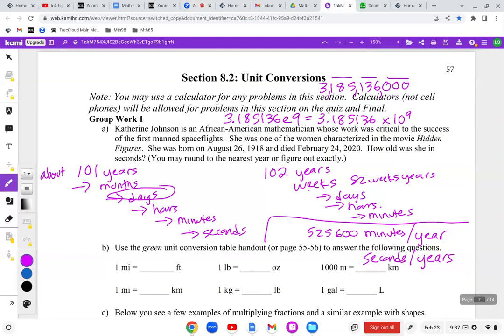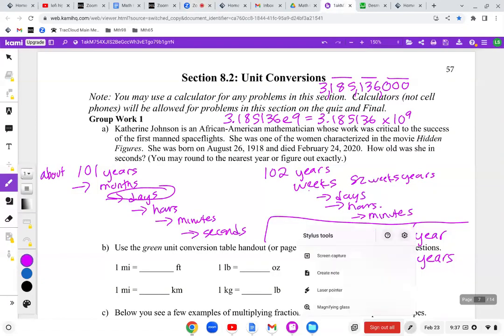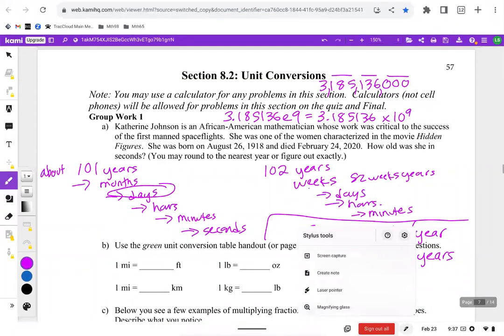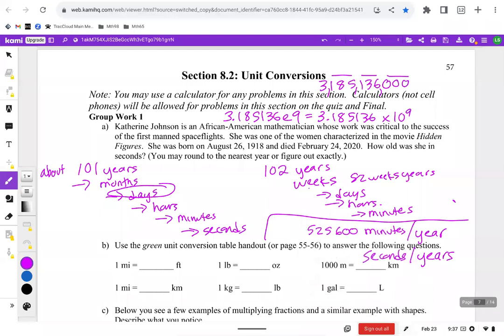Today, we are going to go over Section 8.2 on unit conversions. We already talked about problem number one, in which we tried to figure out how many seconds Catherine Johnson lived. She lived to be 101 years old, and there are a lot of different approaches to figuring this out. Our goal for Section 8.2 is to standardize this approach a bit so that we can keep track of all the units and feel confident in our answers.